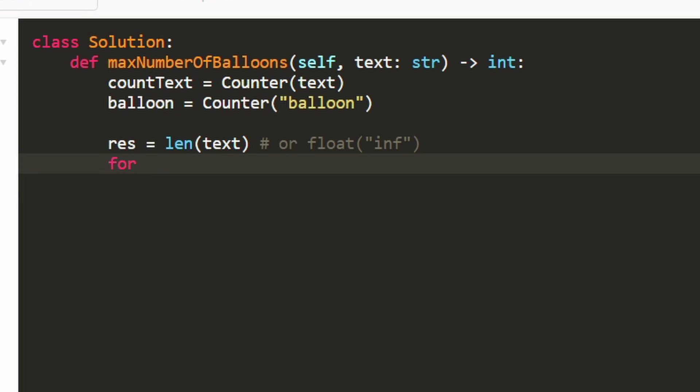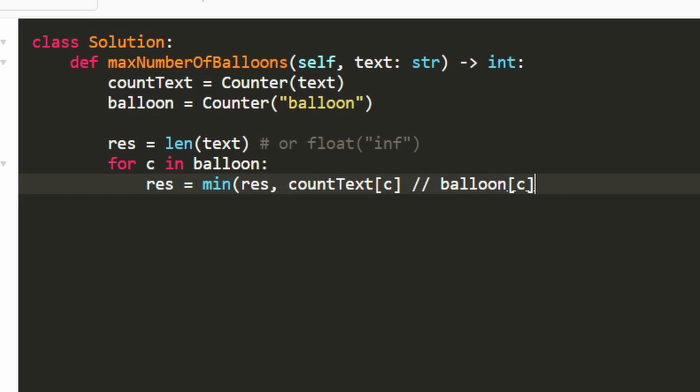Once we have that set up, let's actually go through each unique character in the word balloon. By doing this, we're going through our hash map. And what we want to know is that ratio I was talking about. So we're going to take the count text. So the number of occurrences of this character C and then divide it by the number of occurrences of that character in the balloon string. So we know B occurs once, L occurs twice. That's some potential values this could be. Whatever this ratio is, we want to find the minimum of all the characters. So let's set the result equal to the minimum of itself and this particular ratio.